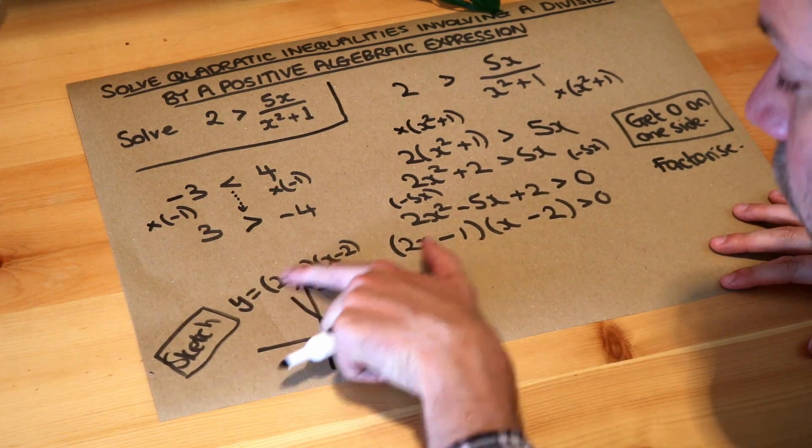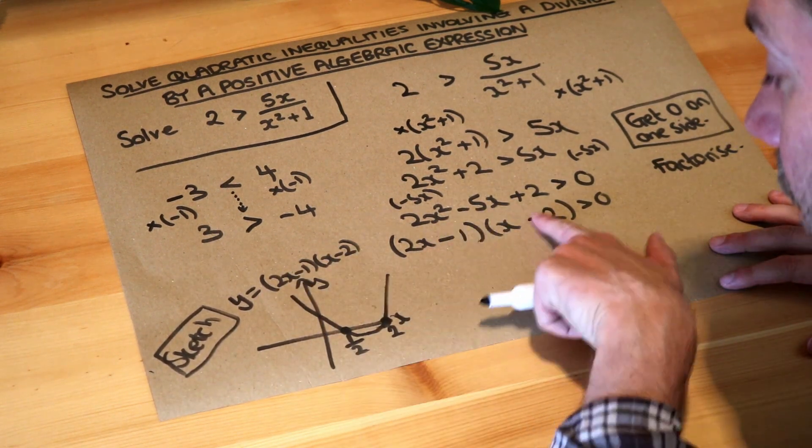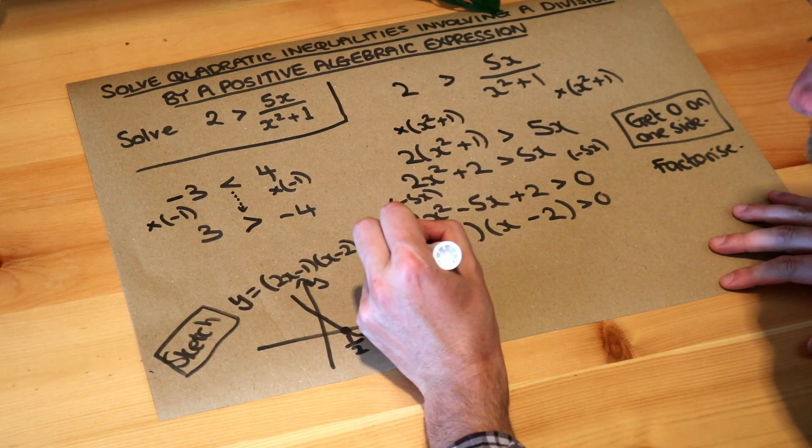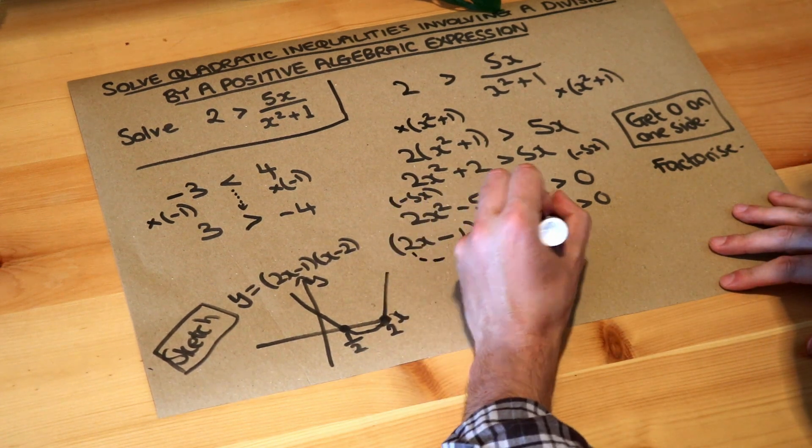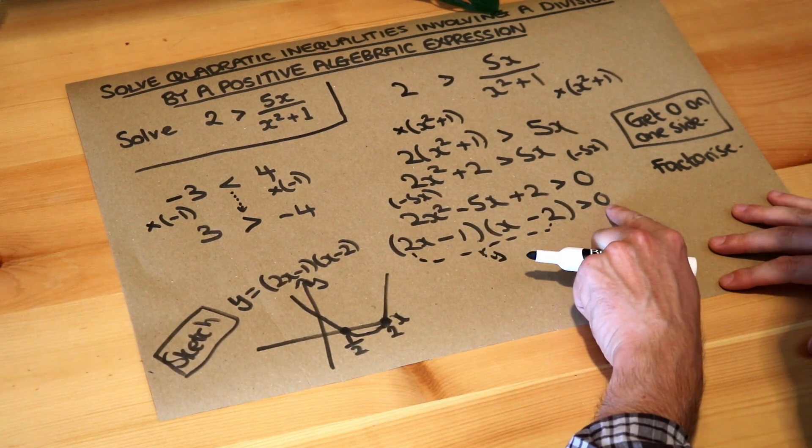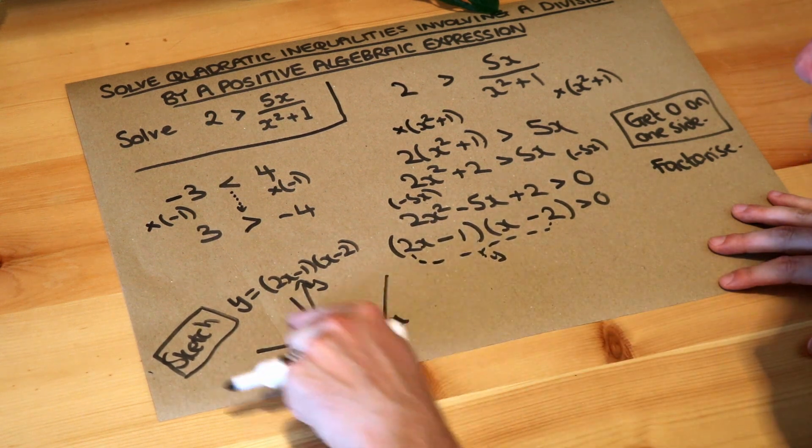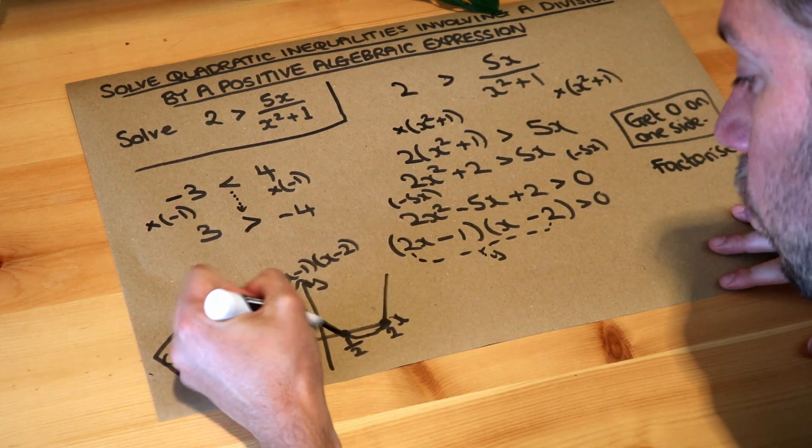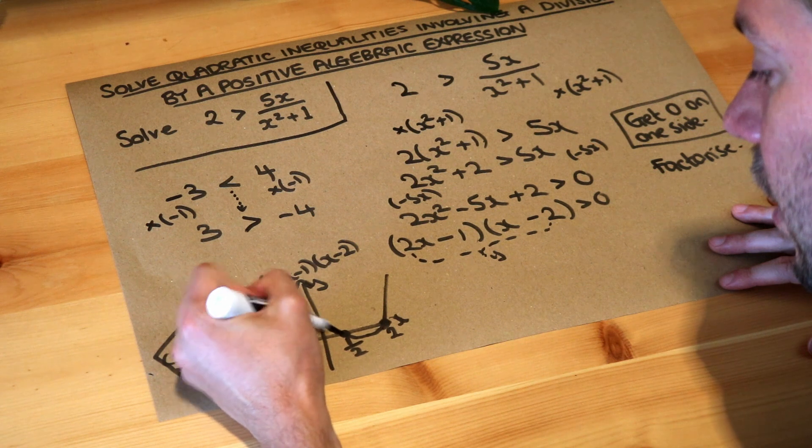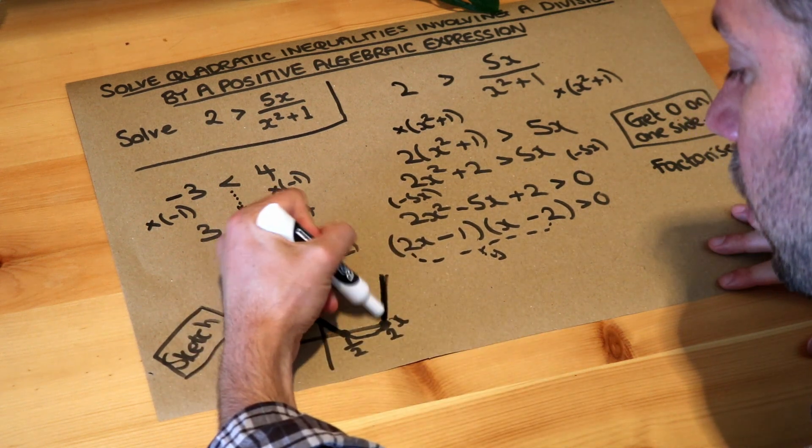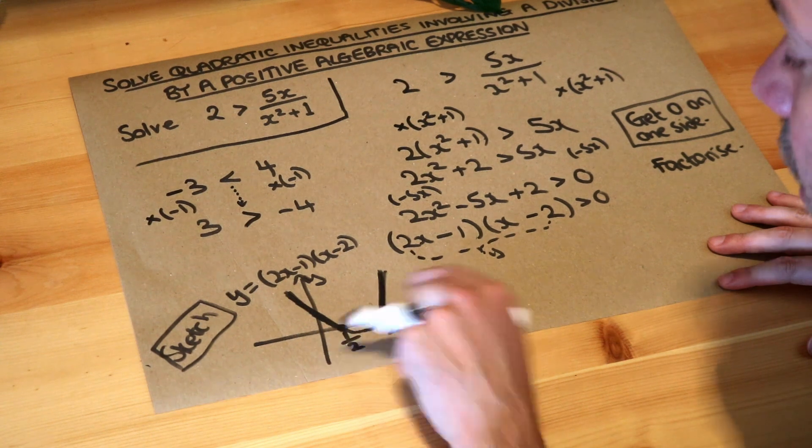Now we sketched y equals this, which is this thing here, so the y value, this is the y value of your sketch, the y value is greater than zero. Where on this graph is the y value greater than zero? Well we can see the y value is greater than zero here and the y value on the graph is greater than zero here.